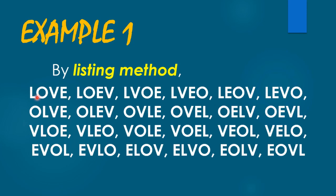So we have the arrangements L, O, V, E — that is one arrangement. We have another arrangement L, O, E, V. We can also have L, V, O, E; L, V, E, O; L, E, O, V; L, E, V, O, and so on and so forth. So using the listing method, we can have 24 arrangements.